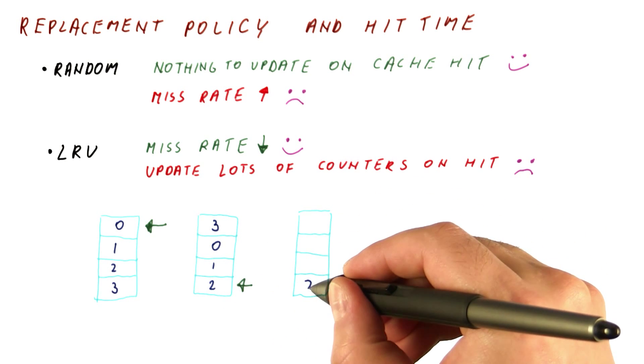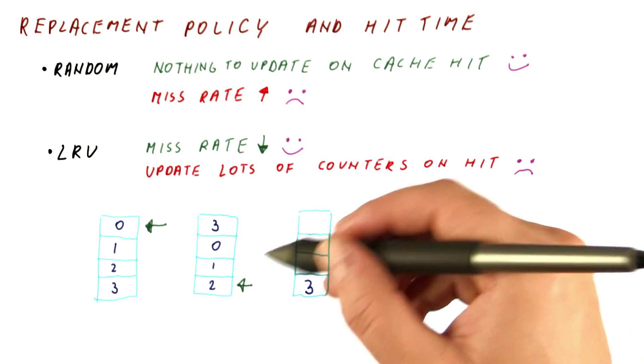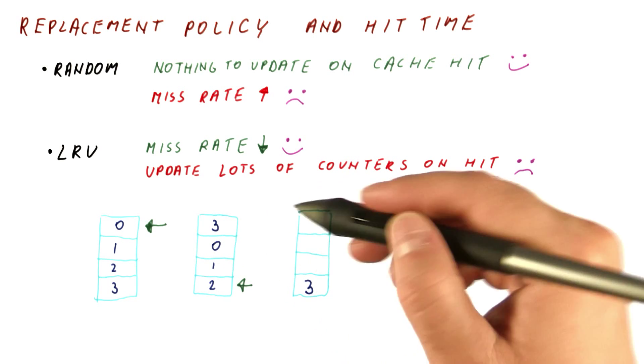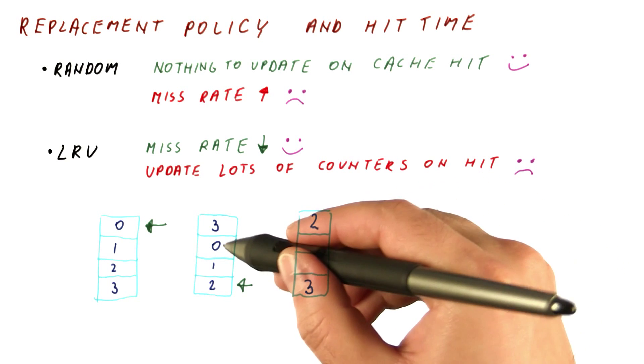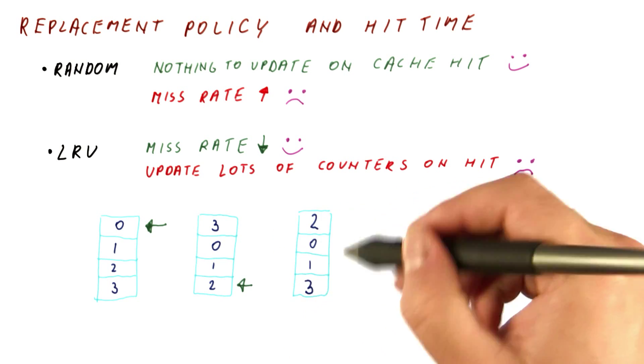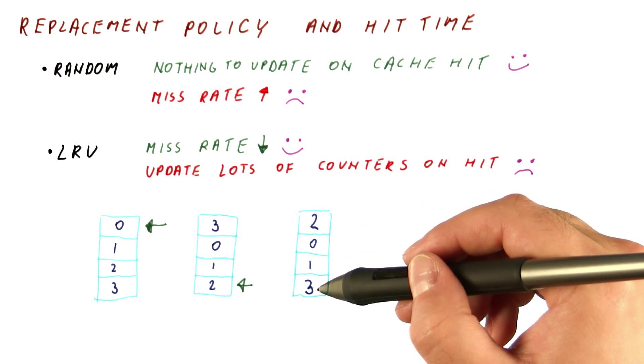In that case, this becomes the most recently used block. The counters that are larger than this one get decremented, so this becomes two. And the smaller than this stay the same, so we get this. So only two counters have changed now.